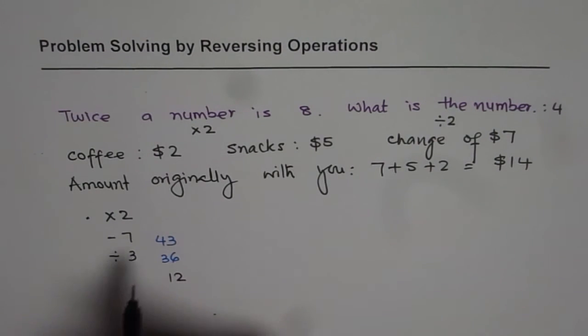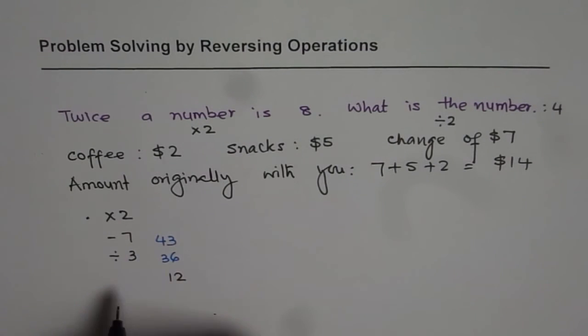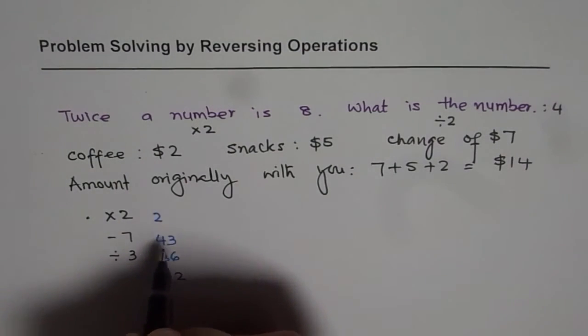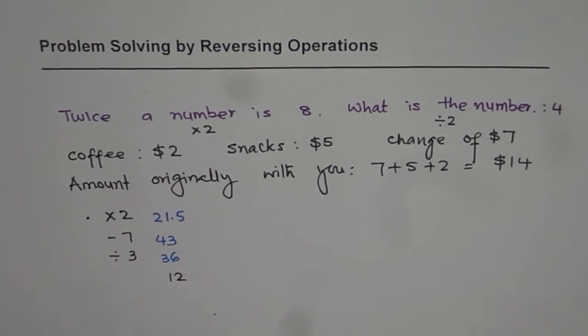That means, you will do half of this. Half of this is going to be half of 43, which is 21.5. So, you started with the number 21.5. We can reverse and get your original number. That is what we can do with the help of reversing operation.